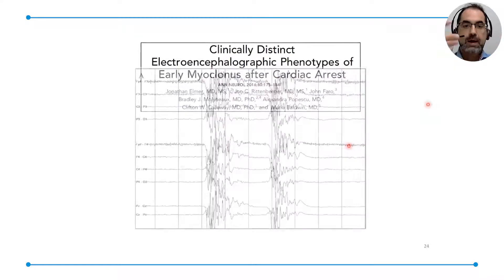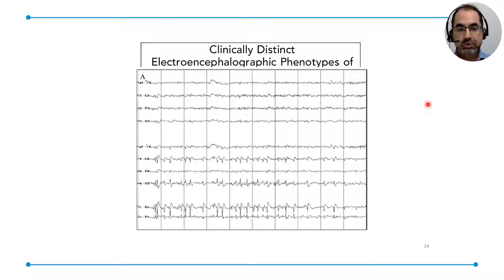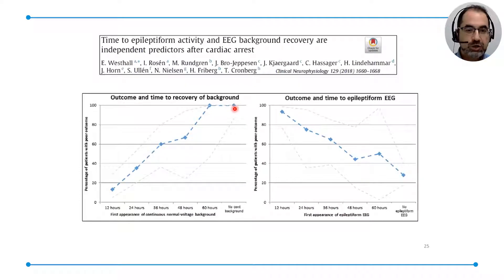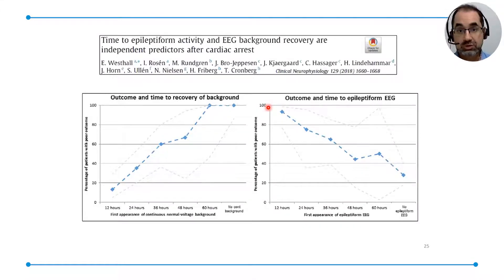Myoclonus is not equal to myoclonus. The most prevalent type is characterized by a suppressed background with very high voltage superimposed polyspikes that are diffuse and time-locked with the myoclonus. On the other side, a proportion of patients show a continuous background with lower voltage midline-centered repetitive spikes. The former is the malignant form; the latter is a precursor of Lance-Adams syndrome, a post-anoxic myoclonus fully compatible with awakening. Regarding timing, the earlier epileptiform patterns appear in the EEG, the worse the prognosis. Keep in mind that during TTM we have propofol, so if you see repetitive epileptiform discharges despite that, it's a bad sign — the aggression to the brain is very heavy.